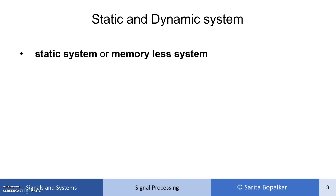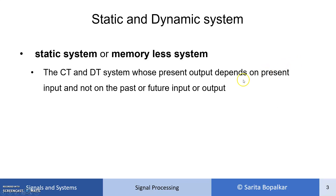Let's see what we mean by static and dynamic systems. A static system is also called a memory-less system. It is a continuous time and discrete time system whose present output y(t) or y(n) depends on the present input and not on past or future input or output of the system.